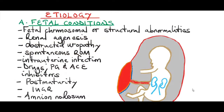As discussed in our video on polyhydramnios, amniotic fluid is contributed from several sources. Most of the amniotic fluid comes from fetal urine. The second source is the placenta. The third is the fetal membranes. Some also comes through the umbilical cord.